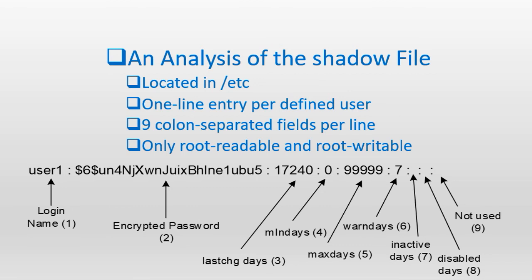Field number four expresses the minimum number of days that must elapse before the user can change their password. A zero or an empty field allows the user to change their password whenever they want with no restrictions. Field number five defines the maximum number of days of password validity before the user starts getting alerts to change their password. An empty field disables this feature, and a value of 99999, which is the default, sets the validity to almost an unlimited period. Field number six sets the number of days for which the user gets warning messages to change their password. A zero or empty field disables this feature; the default value is seven days.